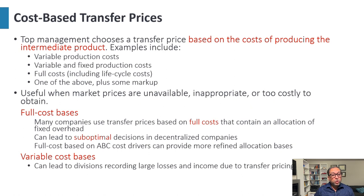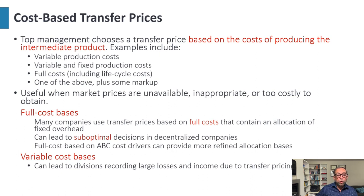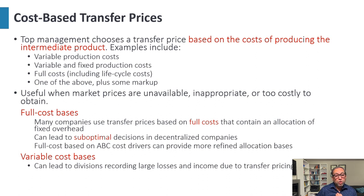For cost-based transfer pricing, top management chooses a transfer price based on the cost of producing the intermediate product. Examples include variable production cost, variable and fixed production cost, full cost including lifecycle cost, or one of the above plus a markup. This is useful when market prices are unavailable, inappropriate, or too costly to obtain. Many companies use transfer prices based on full cost with an allocation of fixed overhead, though this can lead to suboptimal decisions in decentralized companies. ABC cost drivers can provide a more refined allocation basis. Variable cost basis can lead to divisions recording large losses due to transfer pricing.